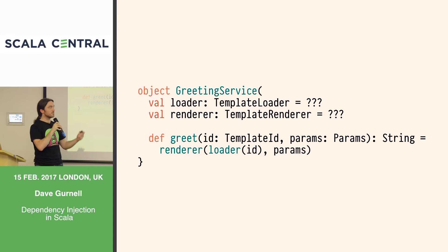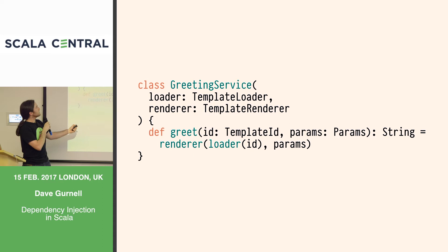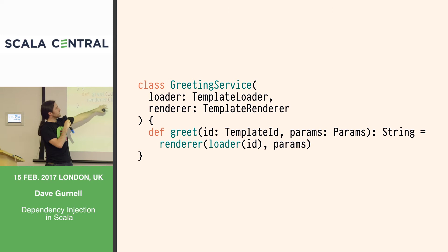So let's go with the first approach. Why don't we just turn everything into classes and inject things as constructor parameters? We turn our greeting service into a class with two constructor parameters — loader and renderer — and in our greet method we just use them. It all seems reasonably fine.